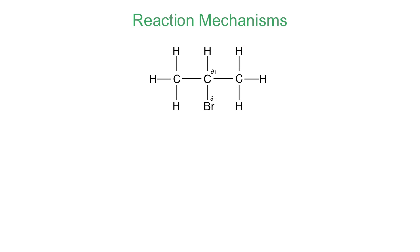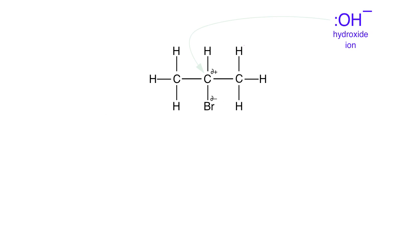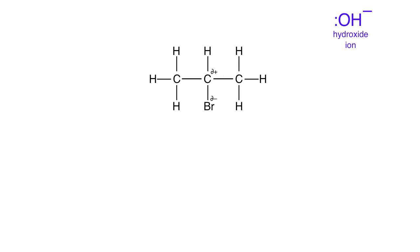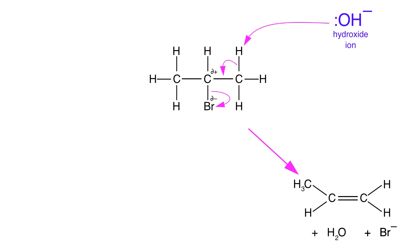Reaction mechanisms. Here we have 2-bromopropane and this can react with hydroxide ion. The curly arrow can come in, attack the delta-positive carbon centre, displace bromide ion, giving us propan-2-ol or 2-propanol. This is an SN2 nucleophilic substitution reaction, where the hydroxide ion is behaving as a nucleophile. Alternatively, the hydroxide ion can abstract a proton, form an alkene double bond, displace the bromide ion to give propene, eliminating HBr. This is an E2 base-catalyzed elimination reaction, in which the hydroxide ion is behaving as a Brønsted base.